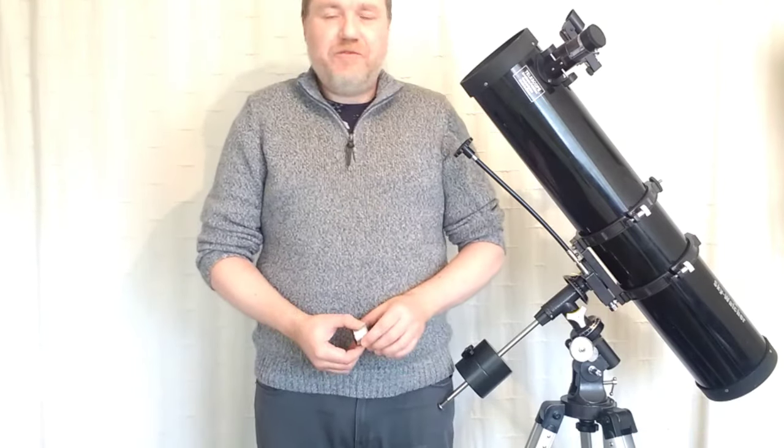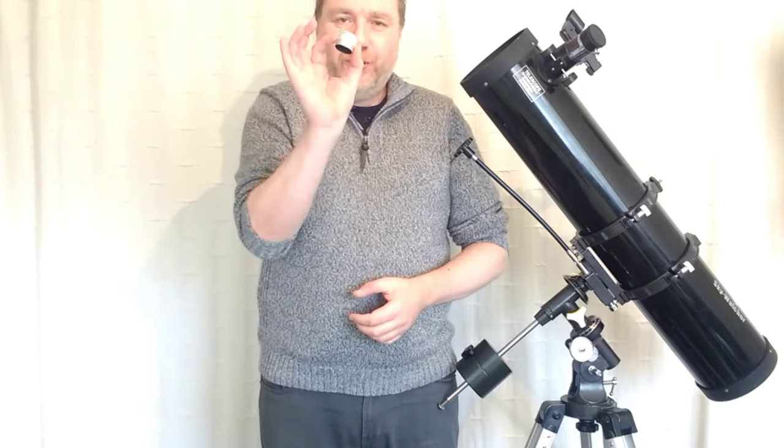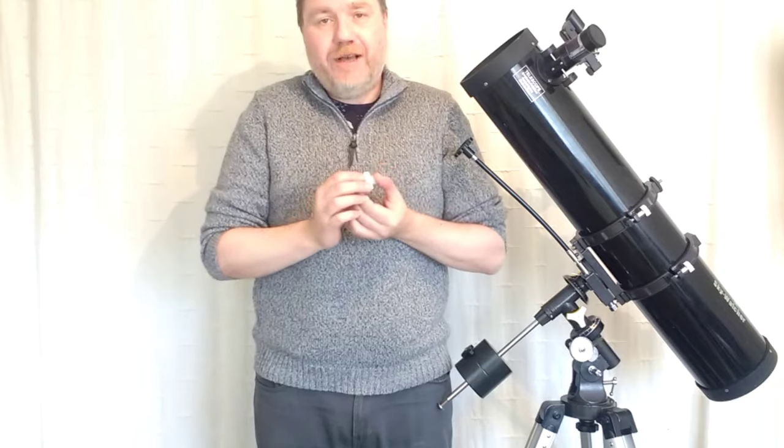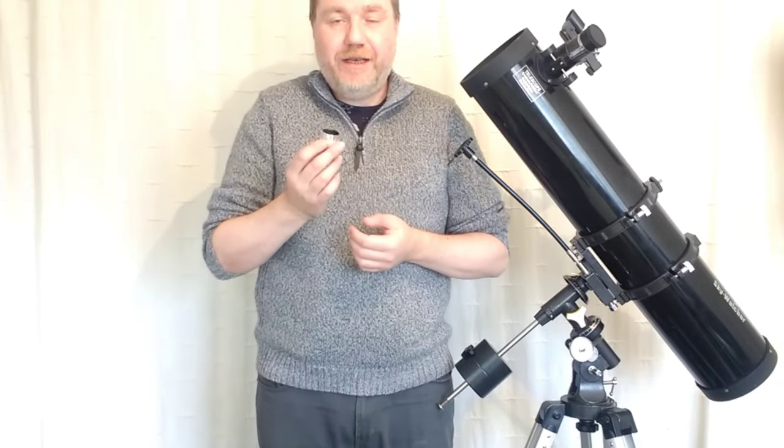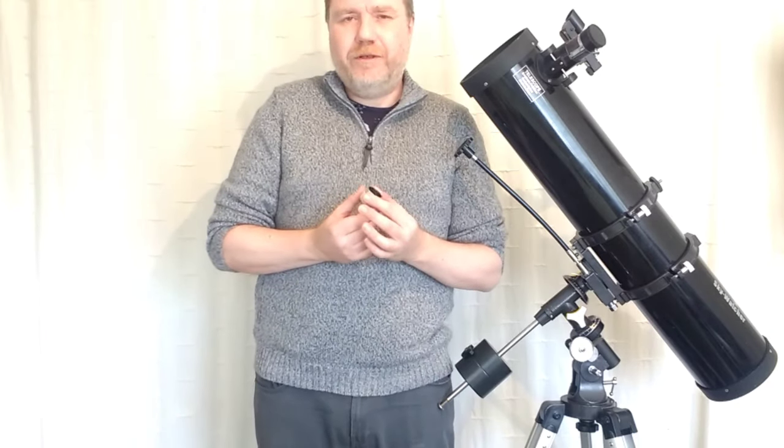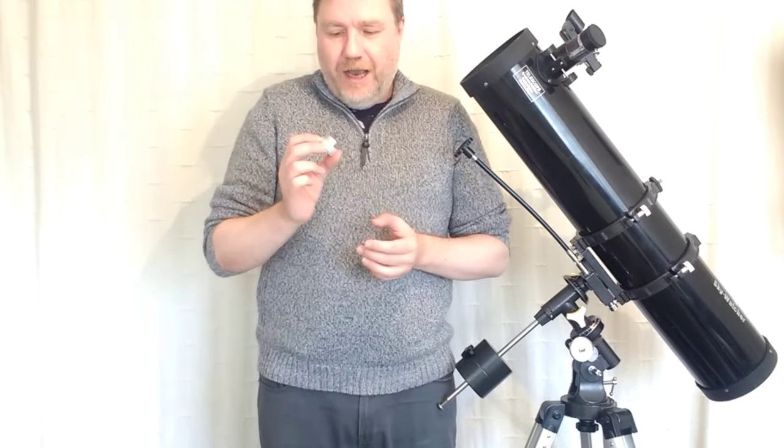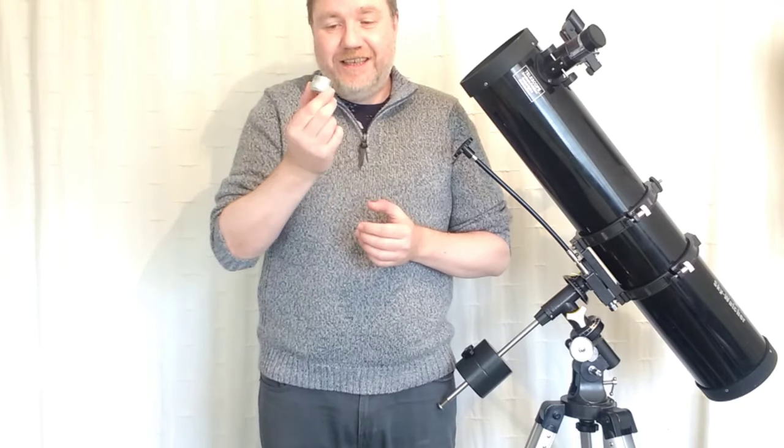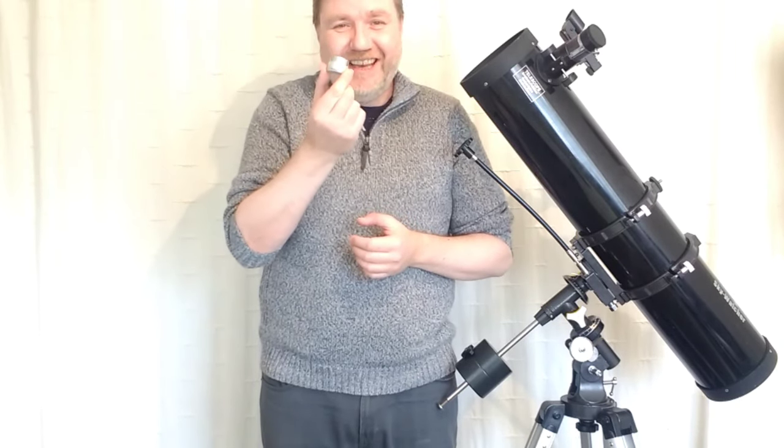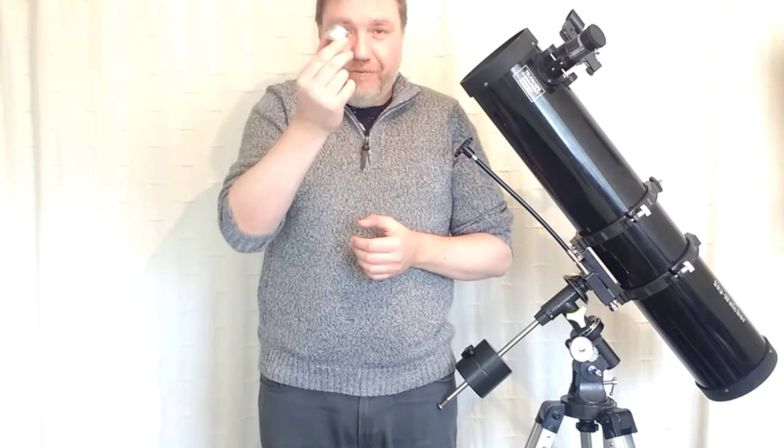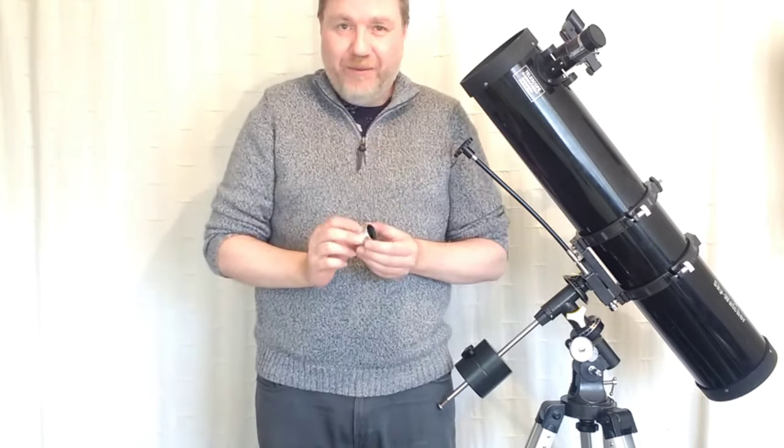The method I use and I've used for years is the good old collimation cap. This is one I've made myself which you can do also, you don't have to buy these things, they do sometimes come provided with telescopes. I'll show you exactly how to make this and the thing is these can't lie. If this says it's wrong it's wrong. So without further ado let me just show you how to make one of these things.